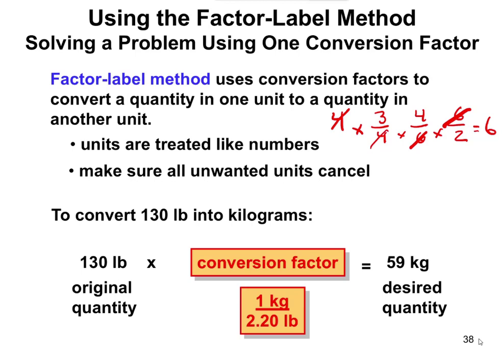So if we wanted to convert 130 pounds into kilograms, the way we would do this is you have 130 pounds, you multiply by 1 kilogram per 2.20 pounds and it gives you 59 kilograms. Let me write this out. You start with your known quantity, 130 pounds. You're going to multiply it. You want to put pounds on the bottom so that they cancel out. We want to convert it to kilograms up top, and we know that our conversion is 2.20 pounds per 1 kilogram.